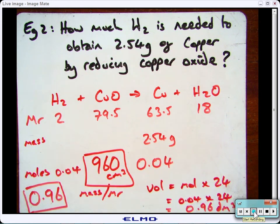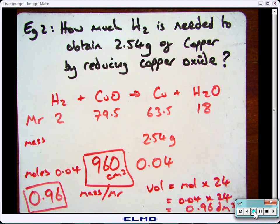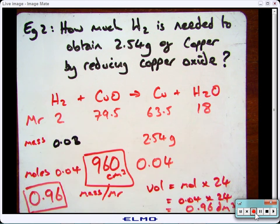On a side note, if you wanted to work out the mass for any of these now, because you've got the moles, you've got the MR, you can then put that into the calculation, which would be 2 times 0.04, which is 0.08. But you don't need to worry about that. That's covered in the previous section.